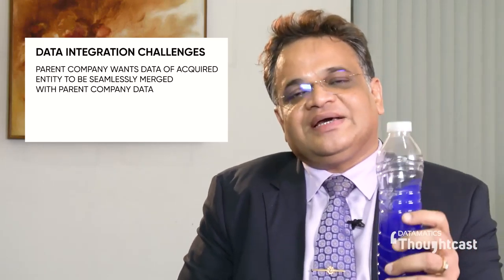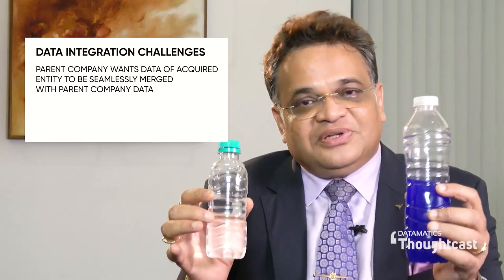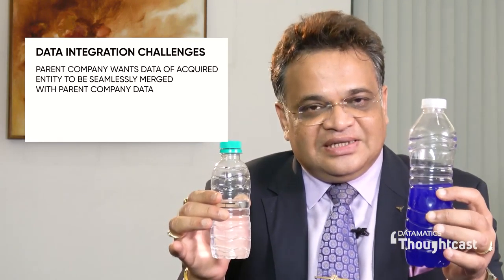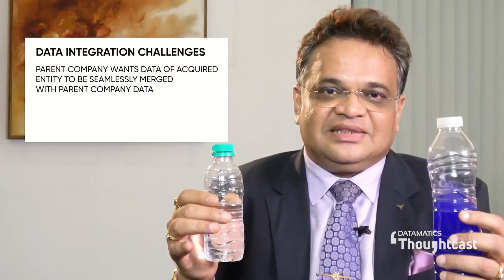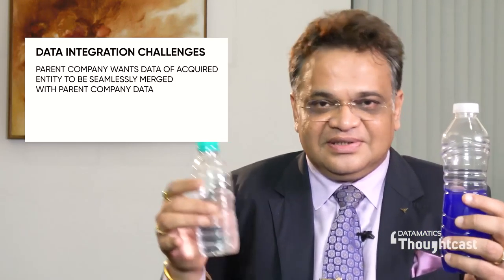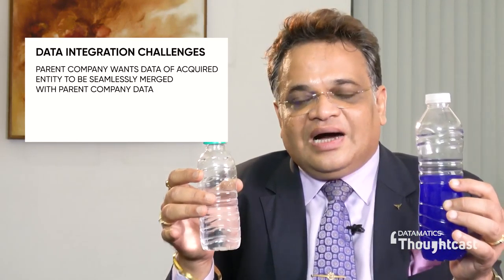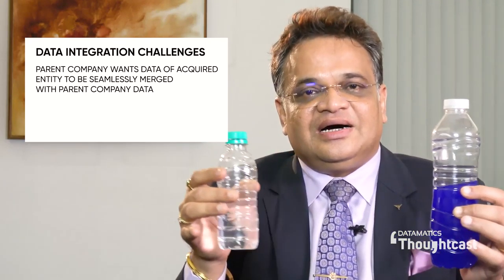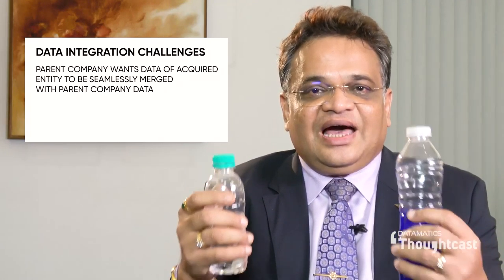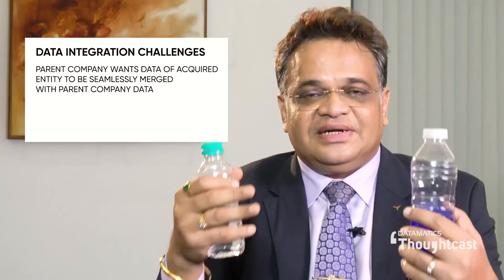Let me explain this in simplest terms with my props. Imagine that this is your parent company's data and this is an acquired company's data. I've taken different colors to differentiate them, so the parent company's data is different from the acquired company's data. How do I ensure that both datasets are merged seamlessly so the parent company gets a seamless view of the entire integrated data?